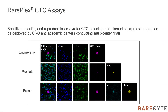Our RarePlex assays for CTC enumeration and biomarker expression analysis are designed for deployment by CROs and for academic centers conducting multicenter trials, and therefore assay requirements are set to Pharma and CLIA standards with an emphasis on accuracy and precision. RareCite products are used for all stages of a CTC assay, from blood draw to result. Nucleated cells from patient blood samples are processed to slides using our AccuCite system, stained with our RarePlex staining kits using manual or automated stainers, and scanned with our SiteFinder instruments that include integrated machine learning algorithms that facilitate rapid and concordant results.